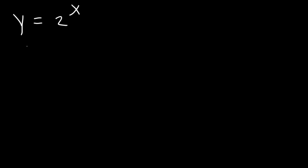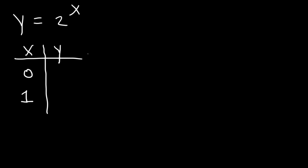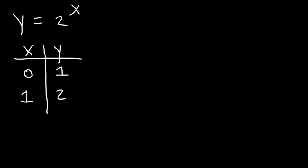In this lesson we're going to focus on graphing exponential functions. We need to pick two points — let's use zero and one. Anything raised to the zero power is always one, and two to the first power is two. You can think of this as 2^(x+0). The number added outside is the horizontal asymptote, so if you don't see a number there, the horizontal asymptote is the x-axis, meaning y equals zero.